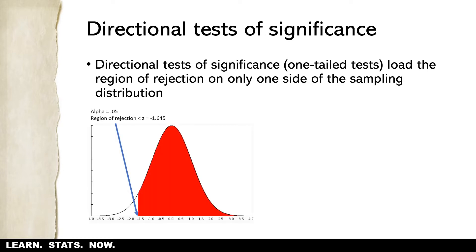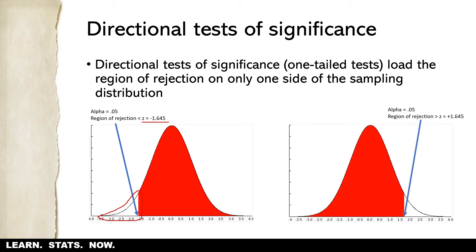For example, we might load the entire region of rejection — all 0.05 of the area under the curve — to the left side. When we do that, the critical value changes: we would reject the null hypothesis if the z-score we obtain is less than negative 1.645.